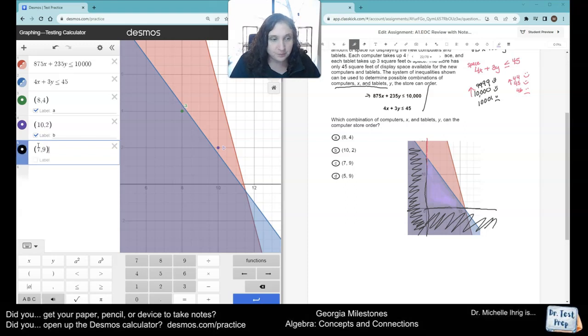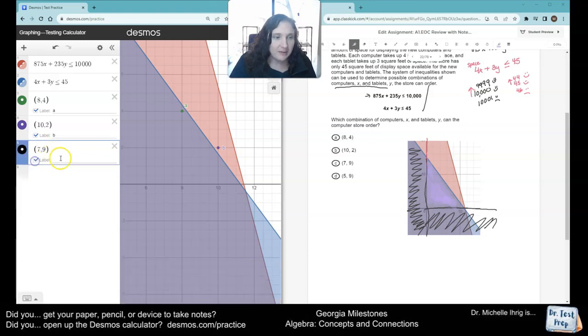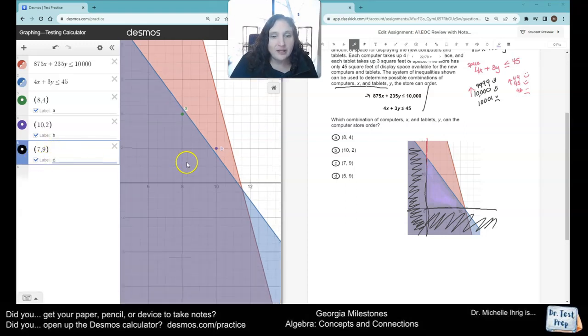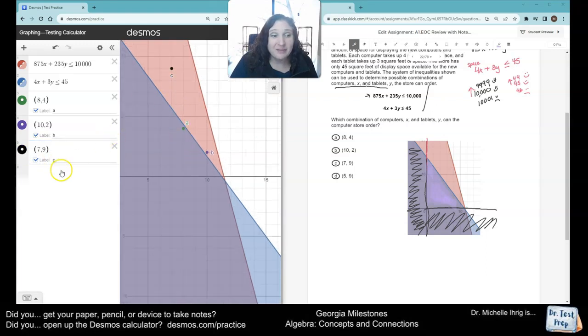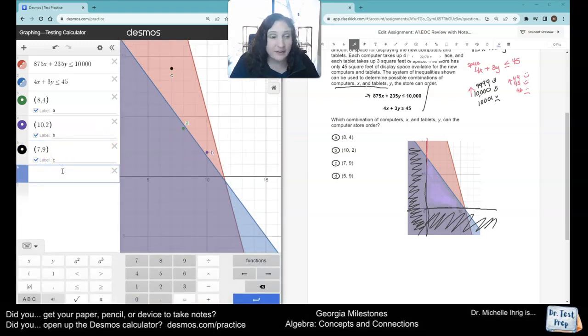Let's type in choice C. I'm going to label that choice C. When we look here, it's all the way up there in the red. That doesn't help us. And then we've got 5-9. Okay. That's also only in the red.